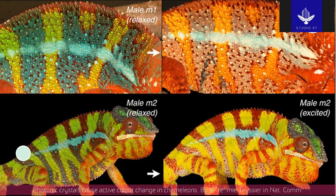Chameleons have evolved superimposed populations of iridophores with different morphologies and functions. The upper layer is a multi-layer structure responsible for rapid structural color change through active tuning of guanine nanocrystals. The deeper layer has iridophores that reflect light in the infrared region. So there are two different types of iridophores — the ones that reflect visible light and the ones that diffract infrared.